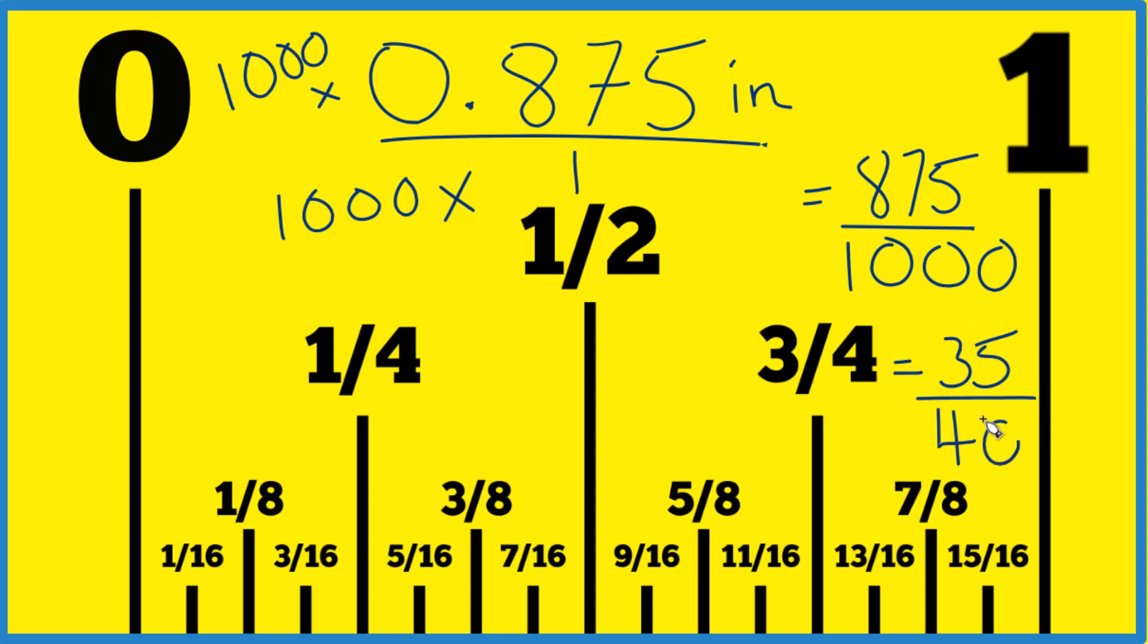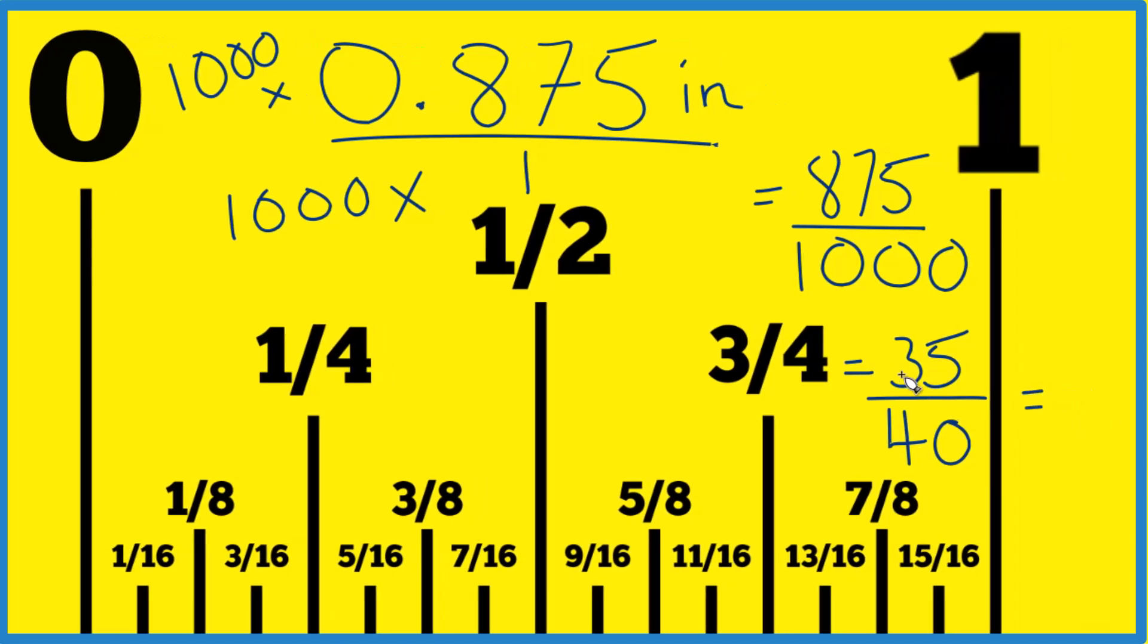So we're close, we can simplify this a little bit more though, because 5 goes into 35. 7 times 5 is 35, and then 8 times 5 is 40, and there we have 7 eighths.